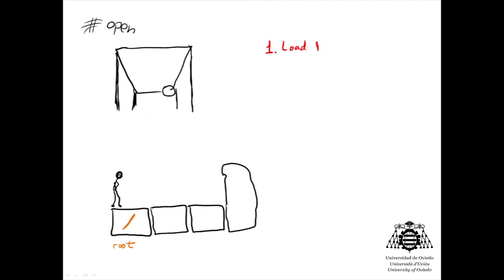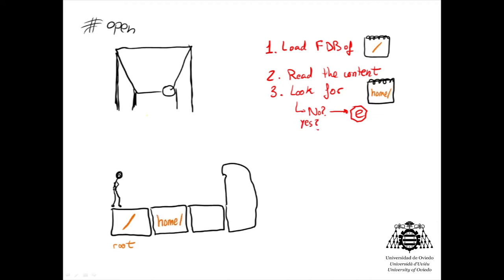Load the file descriptor block of the slash directory to read the content of it, looking for a folder called home. If not found, we should prompt an error message and abort. Happily, it exists, so we repeat the operation.